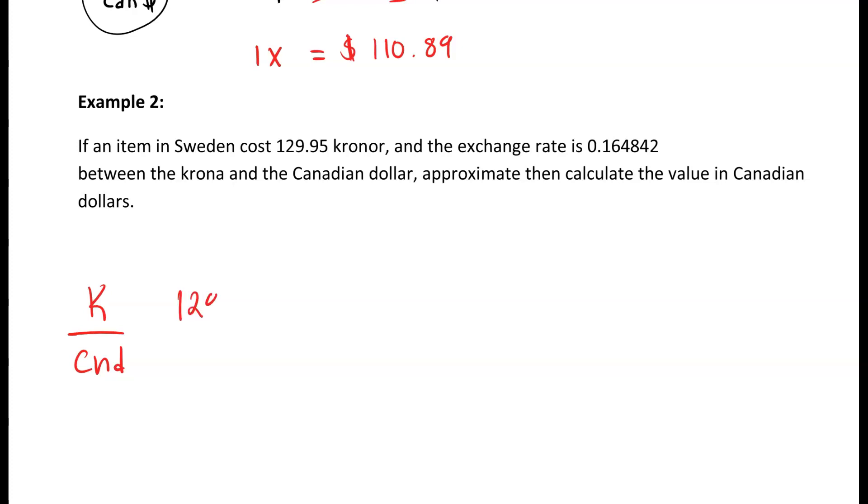So we have 129.95 krone over, well we're trying to figure out how much Canadian we're going to have, equals our exchange rate between krone and Canadian dollars which is 0.164842. The important thing is it's the exchange rate between krone and Canadian dollars, which means you have your 1 on the top and your 0.164842 on the bottom.